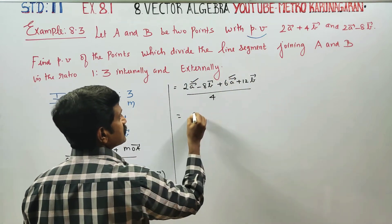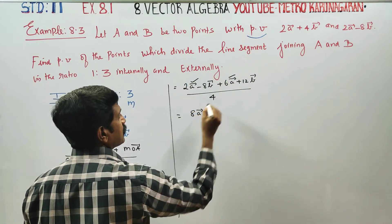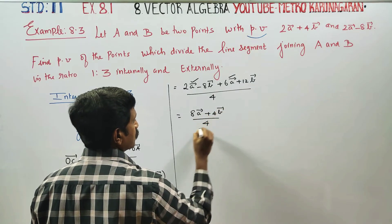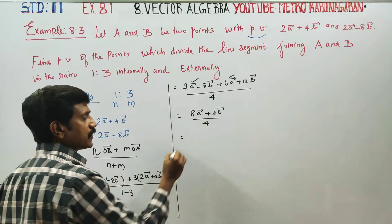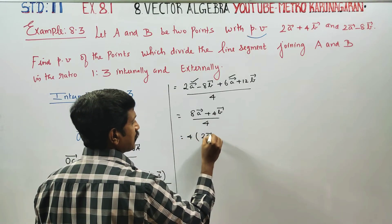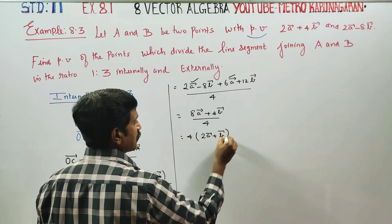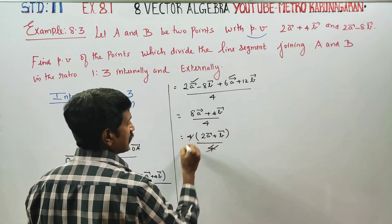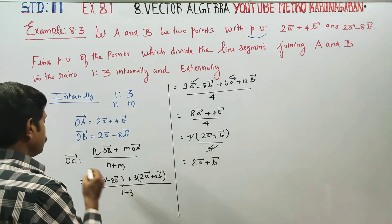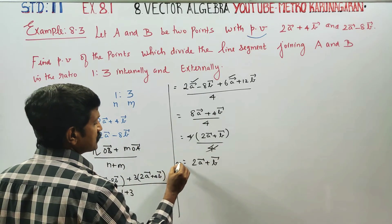Now, 2a plus 6a is 8a vector, minus 8b plus 12b is plus 4b vector, by 4. When you take 4 common, you will be getting 2a vector plus b vector by 4. Your answer is 2a plus b vector divided by 4.